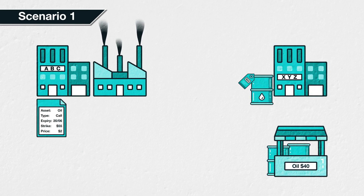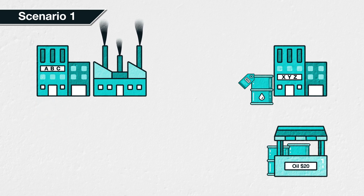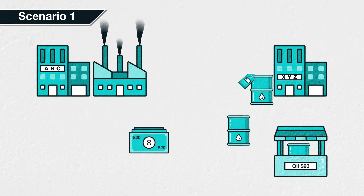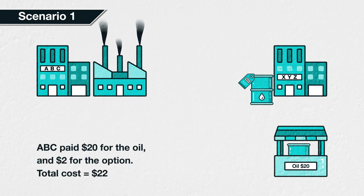Scenario 1: The price of oil has decreased to $20 per barrel on June 20th. ABC is now ready to purchase the oil. The call option gives them the option to buy oil at the strike price of $55 per barrel, but because it's possible to purchase the oil at $20 in the open market, there is no point using the option to purchase it at $55 from XYZ. ABC therefore purchases the oil at $20 per barrel in the open market. They also paid $2 per barrel for the call option, so their total cost is $22 — still well below the $60 threshold. ABC's project is profitable.